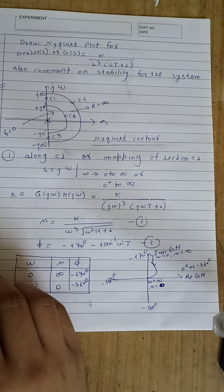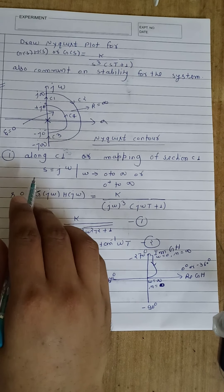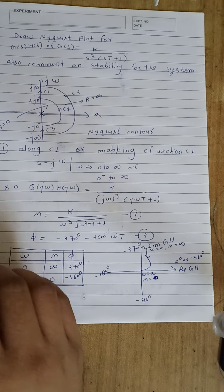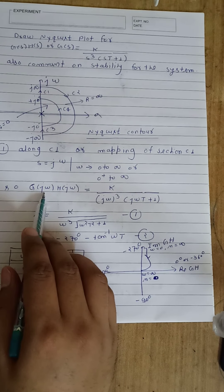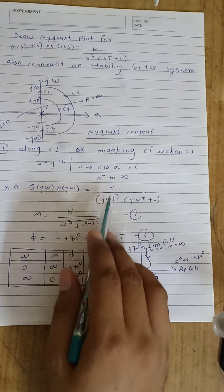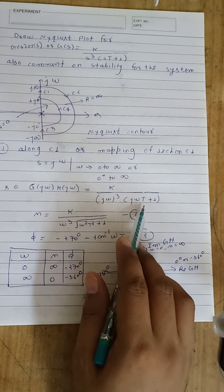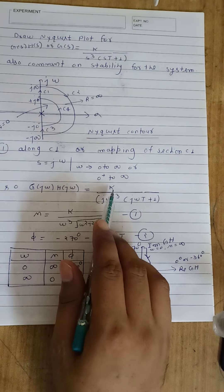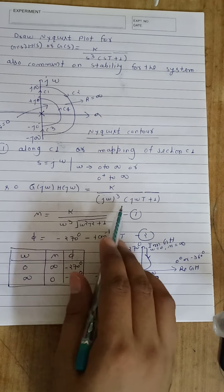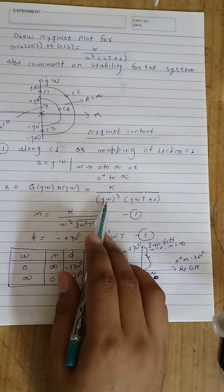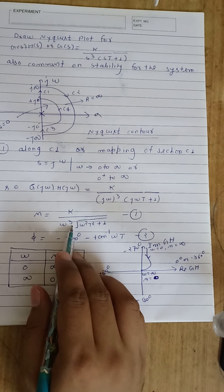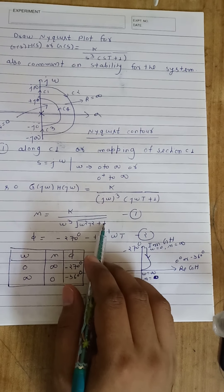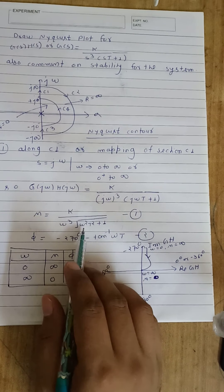Let us define the open loop transfer function at s equal to j-omega. If we put s equal to j-omega in the given open loop transfer function, we have G(jω)H(jω) equal to K over (jω)³ times (jωT plus 1). The magnitude for the numerator polynomial is K, and for the denominator: the first term has magnitude omega to the power 3, and the second term has magnitude equal to the square root of (1 squared plus omega squared T squared).